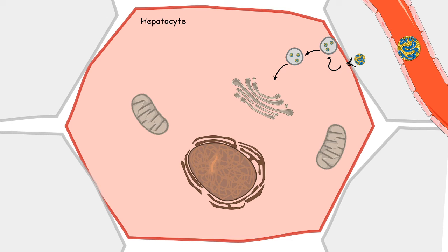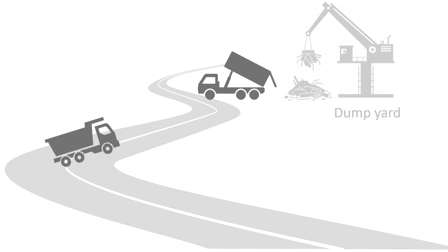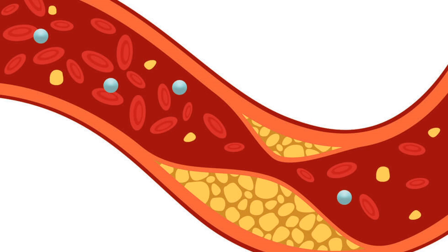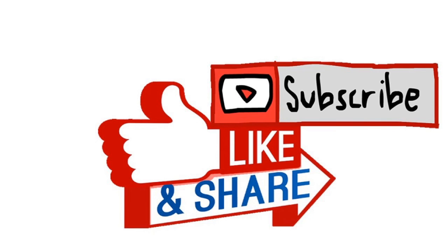Overall, HDL works like a garbage-collecting truck — wherever there is garbage, it picks it up and puts it in the dumpster. Here the dumpster is analogous to the liver, and the garbage near the road represents cholesterol present in the arterial flux, which is picked up by HDL. This excess cholesterol is deposited into the liver for efficient recycling, which prevents the body from the risk of atherogenesis.